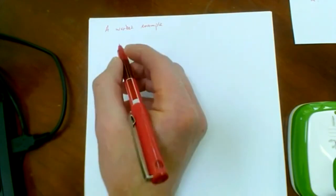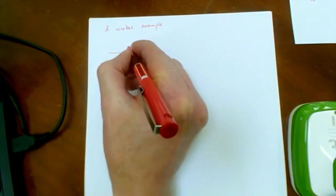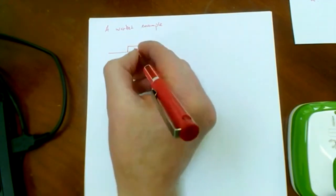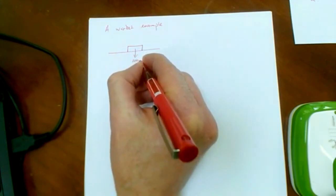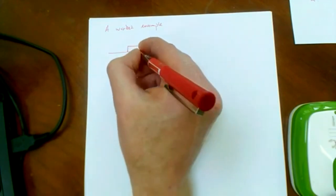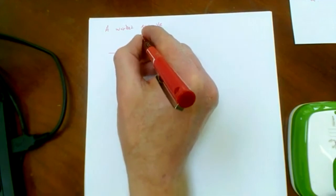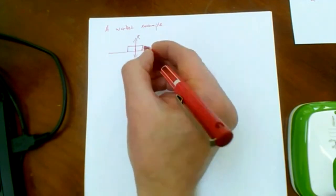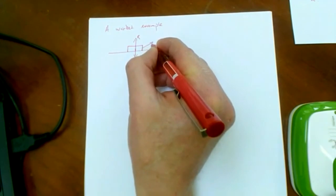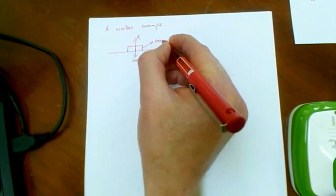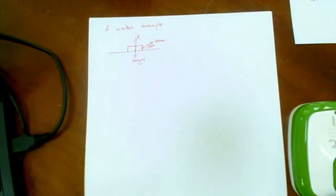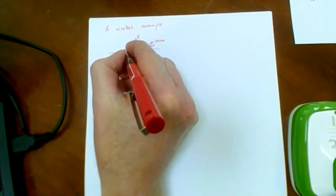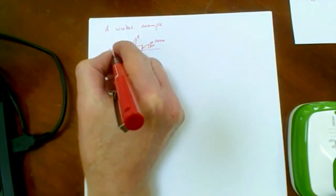A worked example on this composition resolution business. So let's take an object. Let's say it has a mass of 100 kilograms. So there's a force of 100g Newtons as the weight. And we have a reaction R. And we have a force of, let's say, 1000 Newtons acting at an angle of 30 degrees this way. And let's say we have 600 Newtons acting this way.